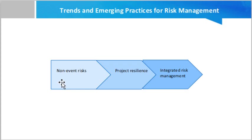The first type is variability risk, where uncertainty exists about some key characteristics of a planned event, activity, or decision. Examples of variability risk include: productivity may be above or below target, the number of errors found during testing may be higher or lower than expected, or unseasonable weather conditions may occur during the construction phase.